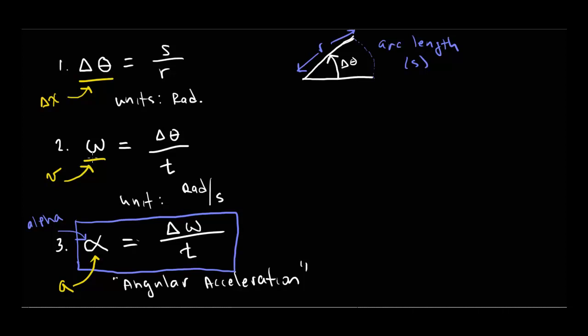These are the three basic ways of measuring rotational motion: displacement, velocity, and acceleration. We're going to put these different quantities into a whole bunch of equations next class. But before we do that, it's really important that you're all confident with what these symbols mean. So at the beginning of next class, we're going to have a short quiz. There's no need to stress out — this is going to be really straightforward. I'm about to tell you exactly what the quiz is going to ask you to do, so you should all get a perfect score if you've watched this video.